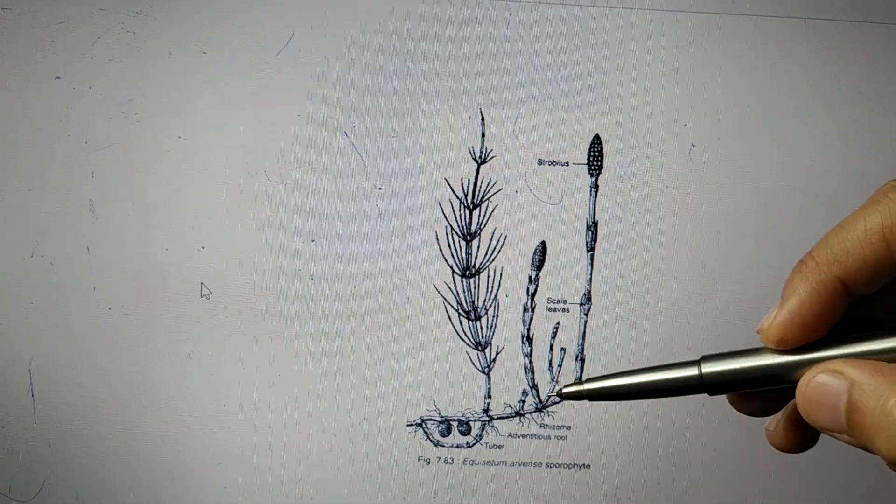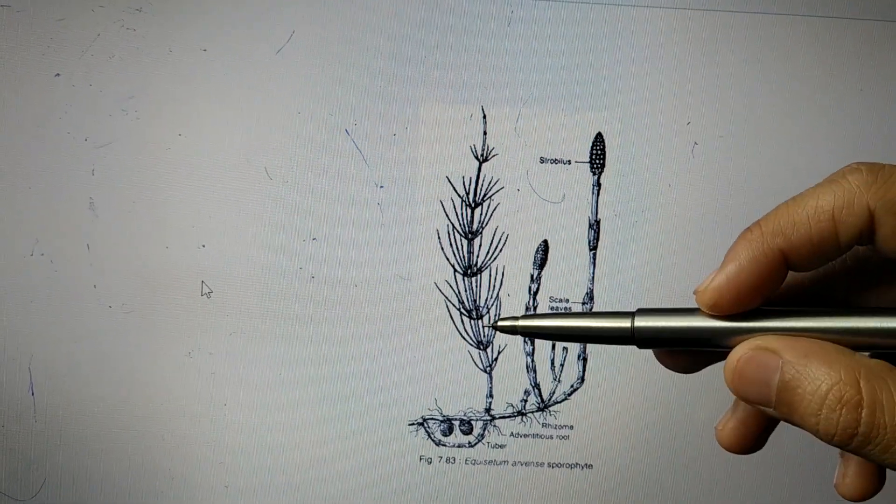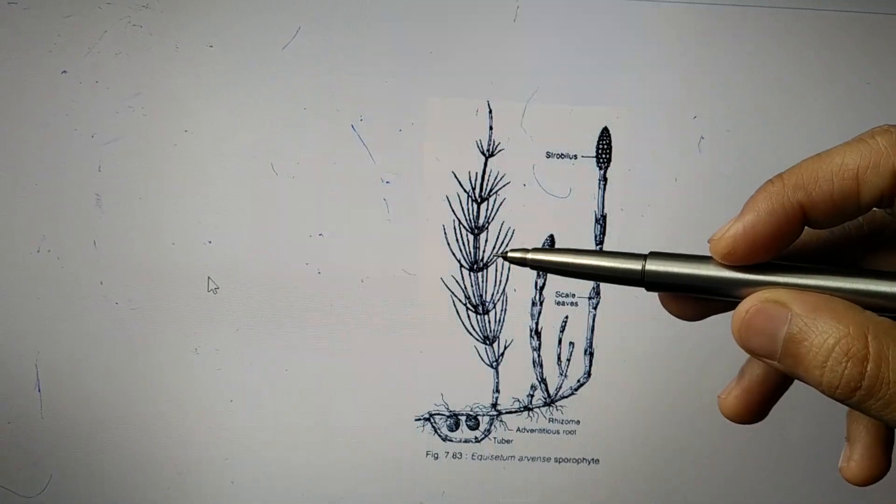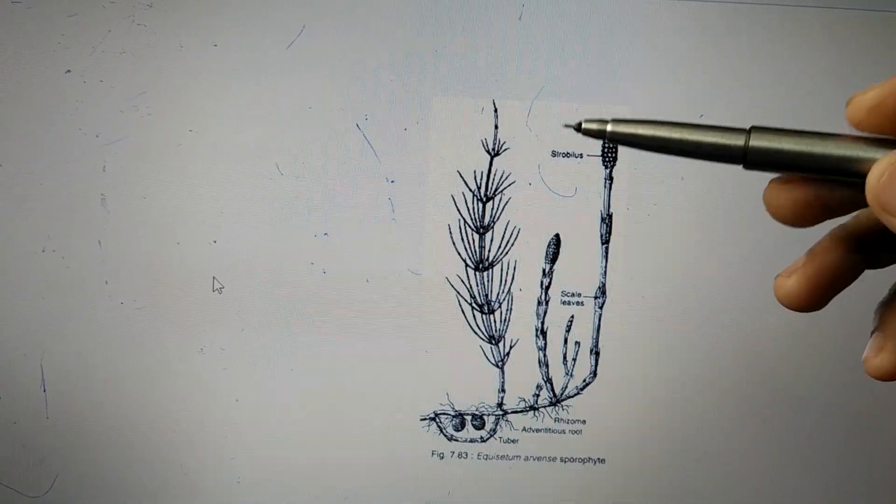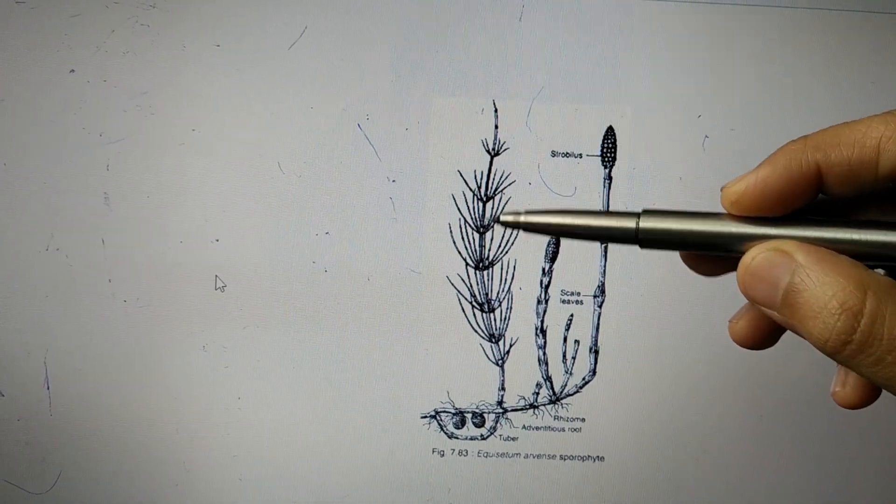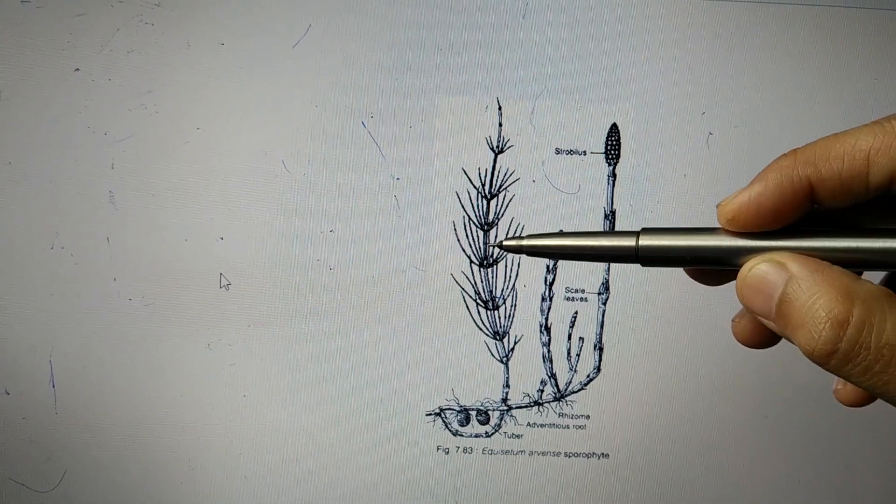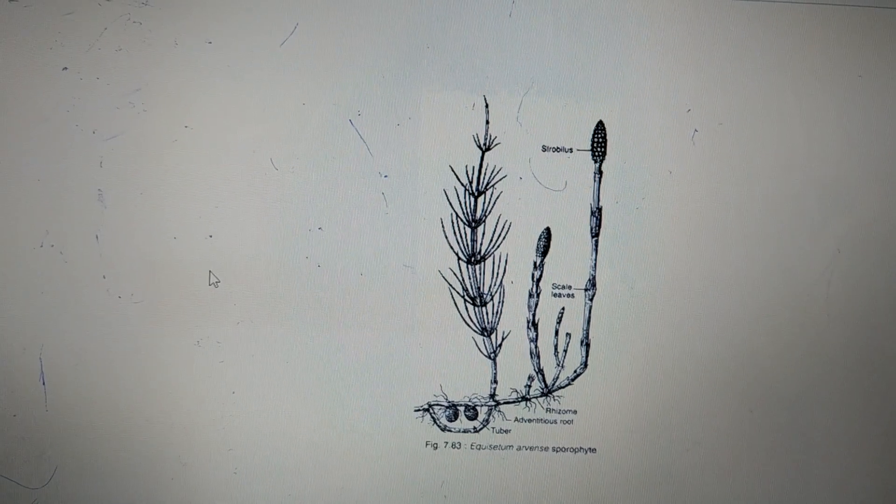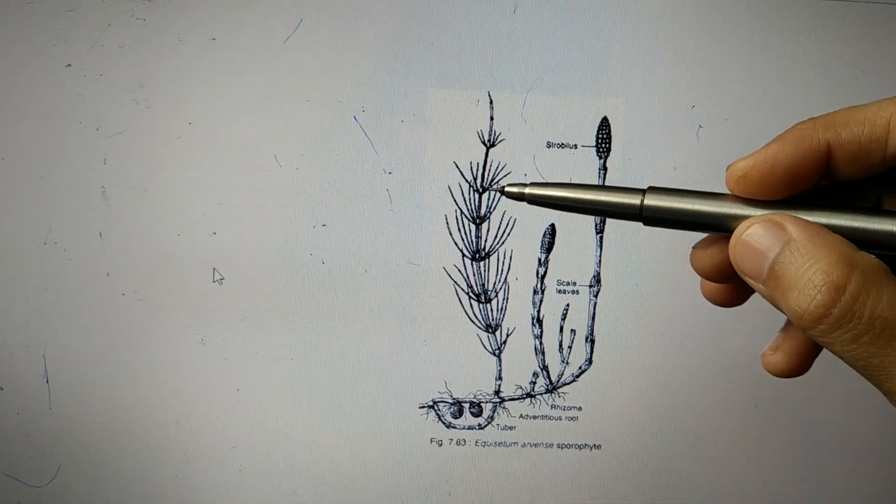The vegetative stem is profusely branched and green in color. There are nodes and internodes present, and the internodes usually have ridges and furrows. The number of leaves is equal to the number of ridges present on the internodes.